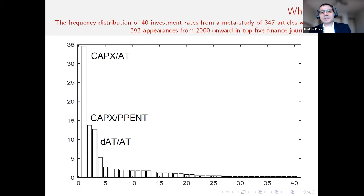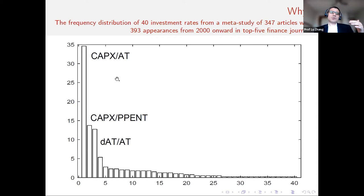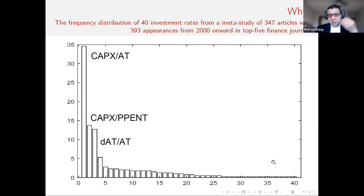We looked at the top five finance journals, adding JFQ and the Review of Finance in addition to the traditional three. We looked at all publications from the year 2000 onwards and identified in total 347 articles containing 40 different investment rates that have appeared in total 393 times. The top three most used variables are CAPEX over total assets, CAPEX over net PPE, and total asset growth, which combined account for over 60% of total appearances. At the other end of the spectrum, 14 different variables appeared only once, and five appeared twice.